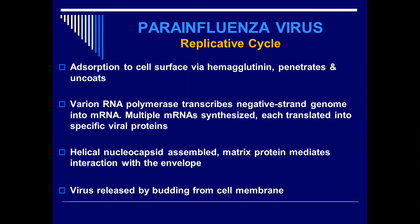First the structural protein genes are translated, then the functional proteins are produced. The helical nucleocapsid is then assembled. The matrix protein mediates interaction with the envelope, and the virus is released by budding from the cell membrane — not by lysis of the cell. The parainfluenza viruses don't cause lysis of cells; they are released from the cell membrane by budding.